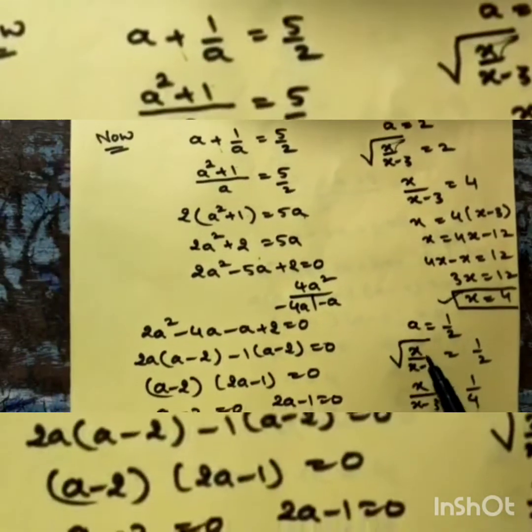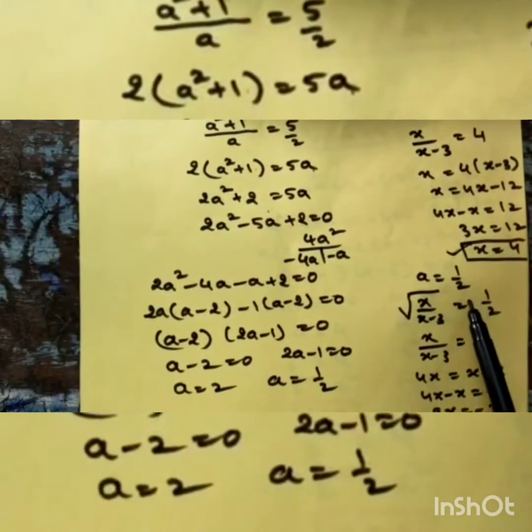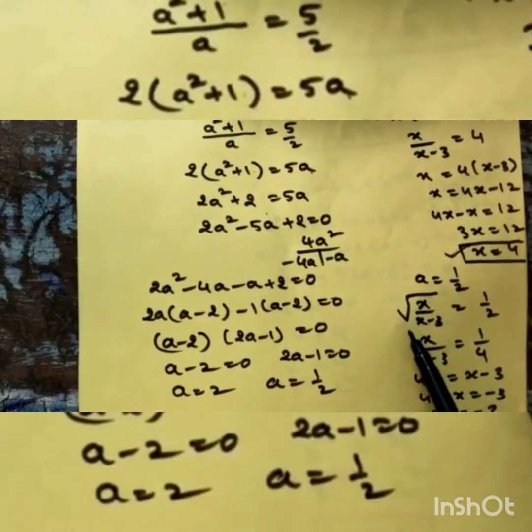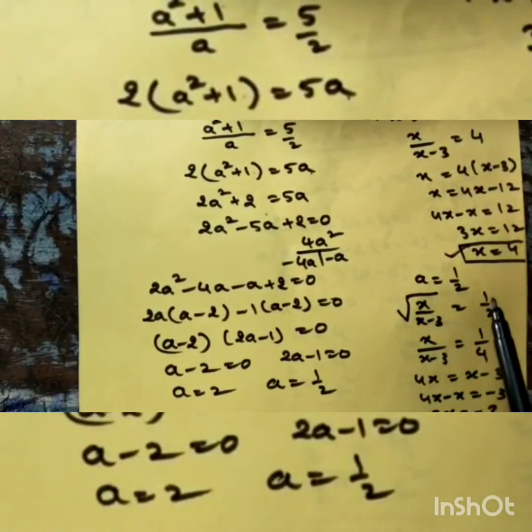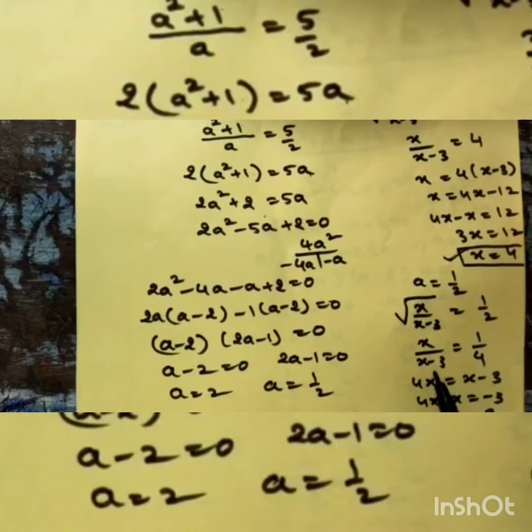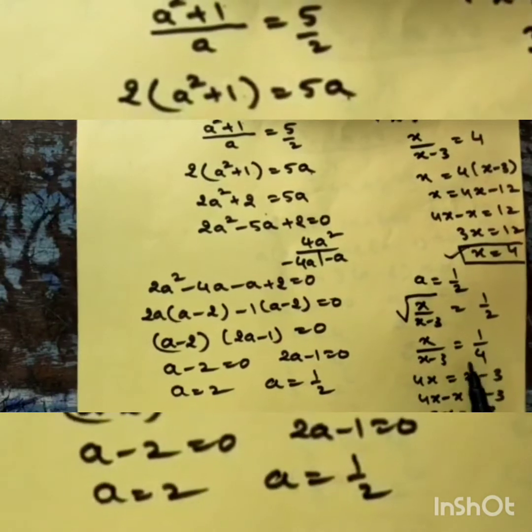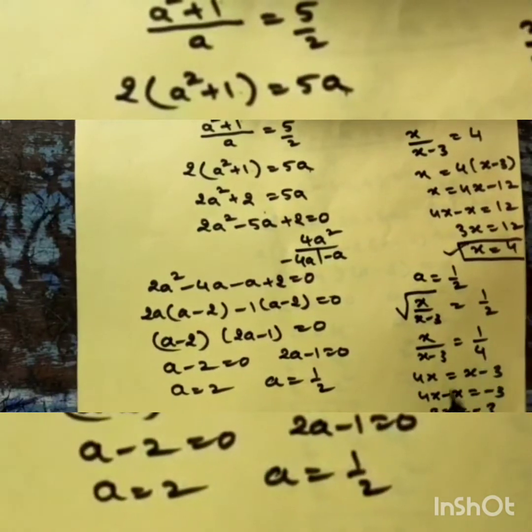For the second case, a = 1/2: √(x/(x-3)) = 1/2. Squaring on both sides gives x/(x-3) = 1/4.